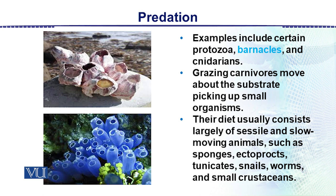Examples of sessile opportunists include several protozoa. Many ciliated protozoa are fixed in place, but their cilia move, allowing them to capture any small living particle or organism that comes near them.